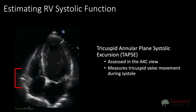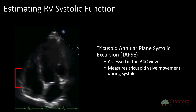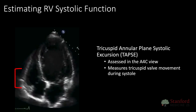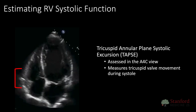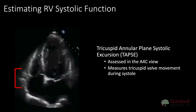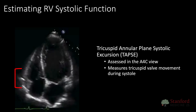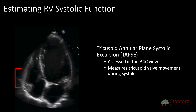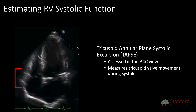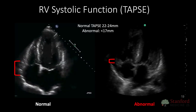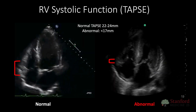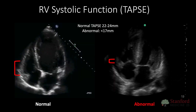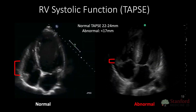Another evaluation for RV systolic dysfunction includes tricuspid annular plane systolic excursion, also known as TAPSE. In this apical four-chamber view, we see the tricuspid valve on the left side of the screen, which moves up and down during systole and diastole. You can measure how far this plane moves as an assessment of RV systolic function. If the TAPSE is generally less than 17 millimeters or 1.7 centimeters, this is considered abnormal and indicates abnormal RV systolic function.